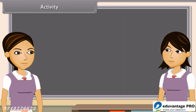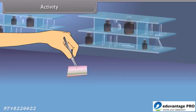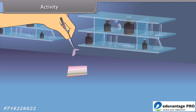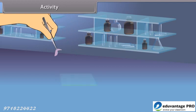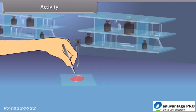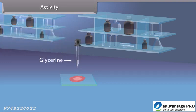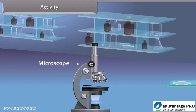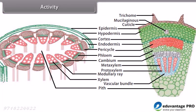We can see by an activity that there are different types of cells in plants. Take a plant stem and cut its thin section. Then stain it with safranin and keep it on a slide with a drop of glycerine and cover it with a cover slip. Observe it under a microscope — we can see various types of cells and their arrangement.